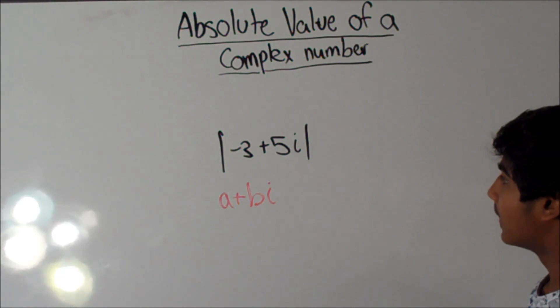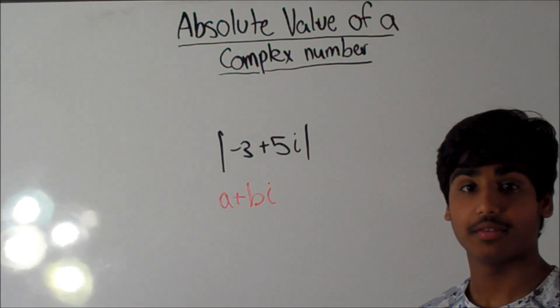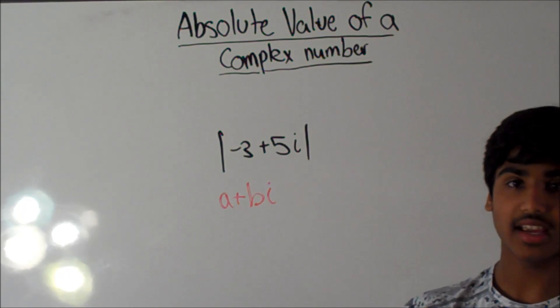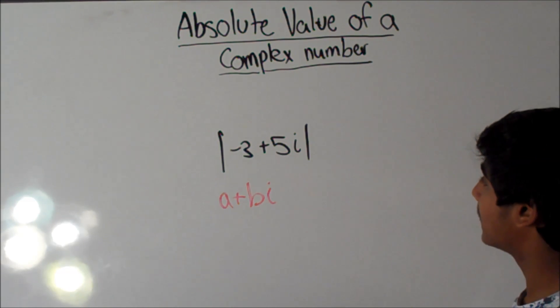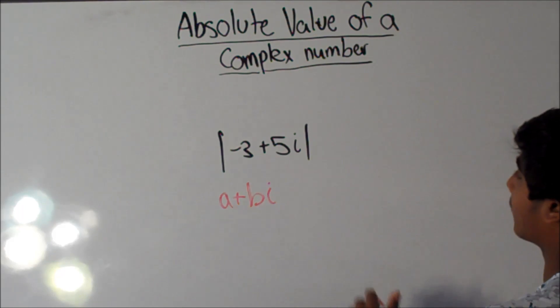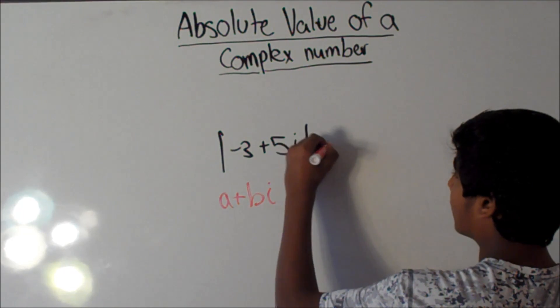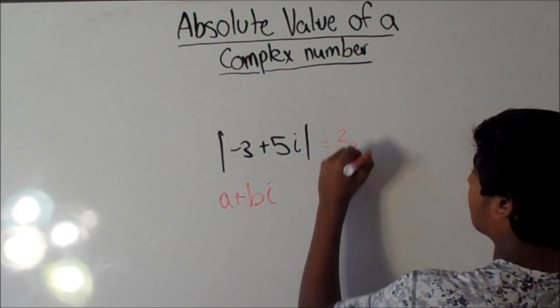That's why we put everything positive in absolute value, because nothing is negative, because the distance can't be negative. So, the absolute value of negative 3 plus 5i would be positive 3 plus 5i.